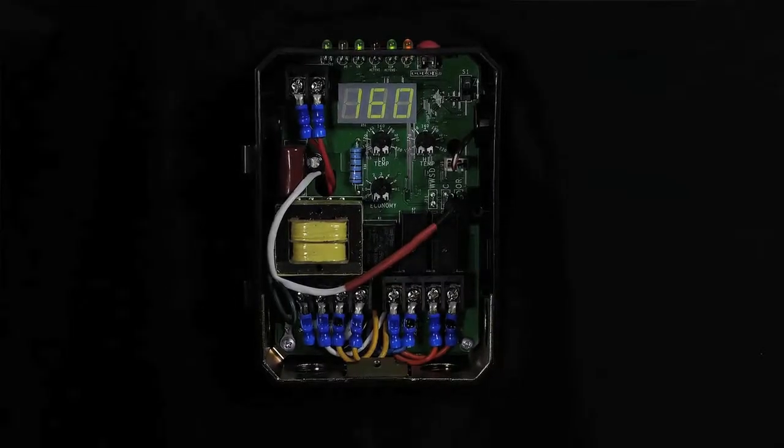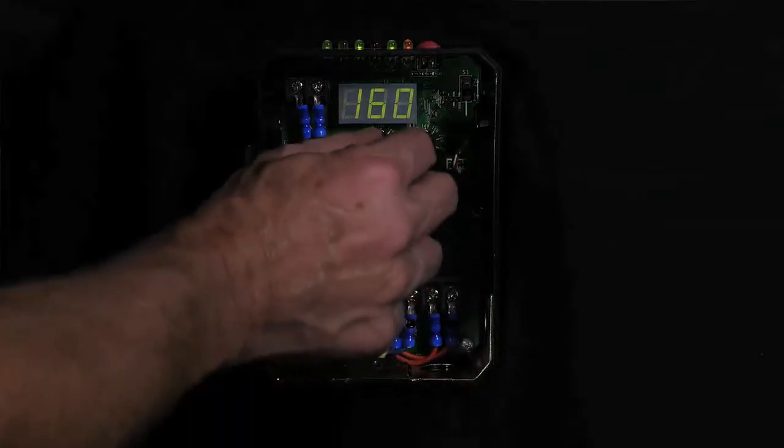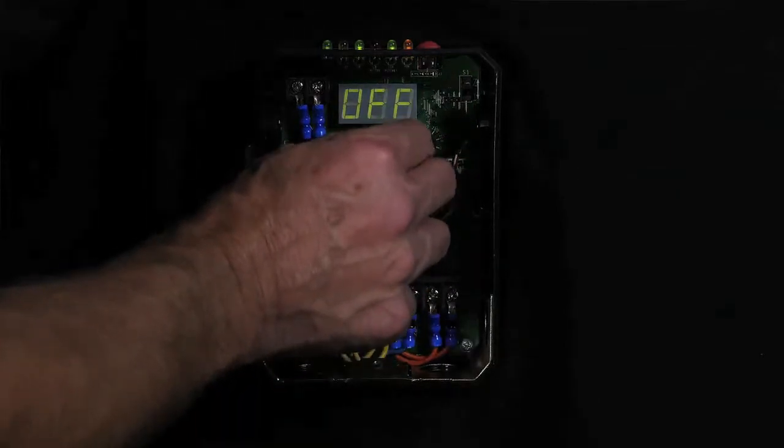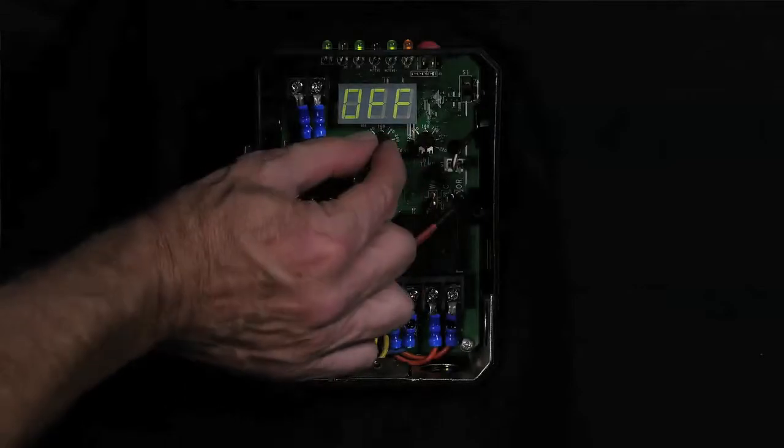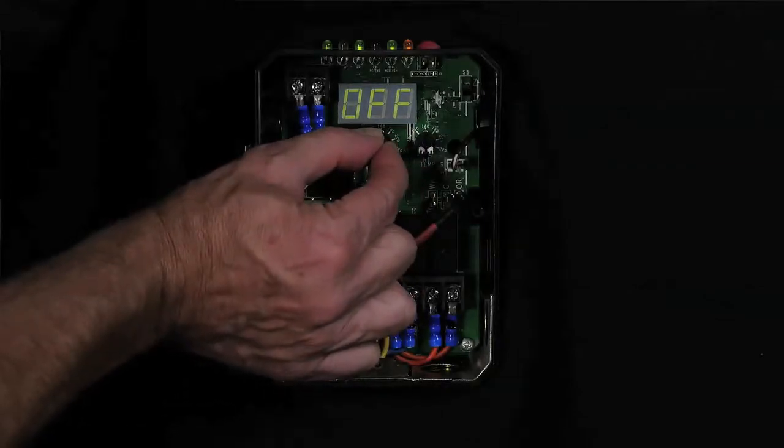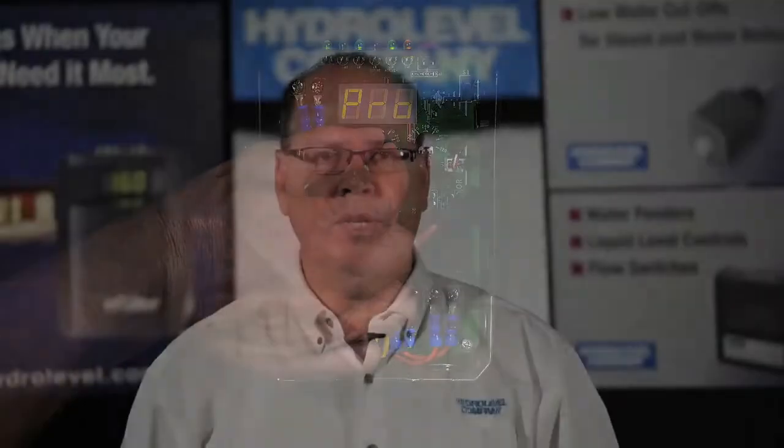To access these features, you must enter the program mode. Start by turning the low temp dial fully counterclockwise until the display reads off. Now slowly turn the dial clockwise until you see PRO on the screen. You are now in the program mode.